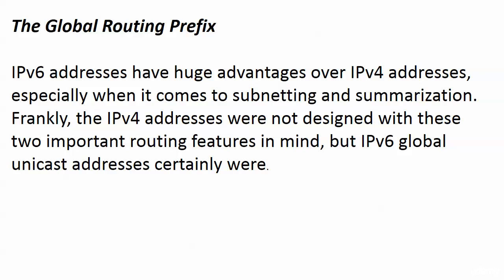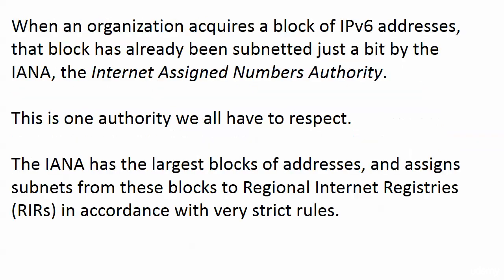That's where our global unicast addresses begin to come in. There's a bit of a food chain when it comes to version 6 address blocks. At the top of that food chain is the IP version 6 authority — the Internet Assigned Numbers Authority, to be exact. This is one authority we all have to respect. They're at the top of the version 6 address block food chain.